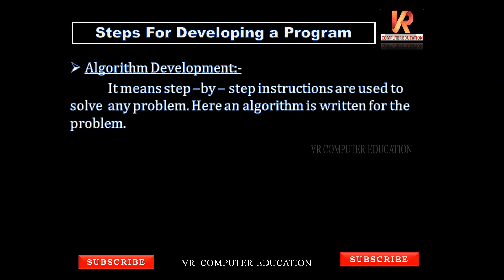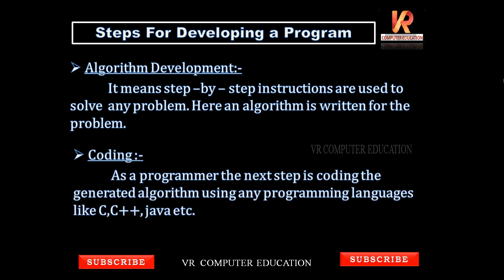Step three: Algorithm development. An algorithm means step-by-step instructions used to solve any problem. Whatever the client's requirements are, everything is written in a step-by-step manner. This step-by-step set of instructions written to solve the problem is called an algorithm. After writing the algorithm, the next step is coding — the programmer writes code based on the generated algorithm using programming languages like C, C++, or Java.